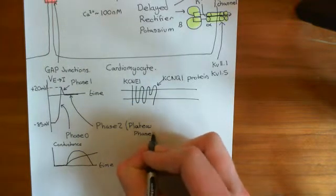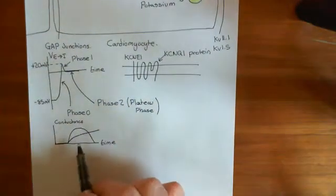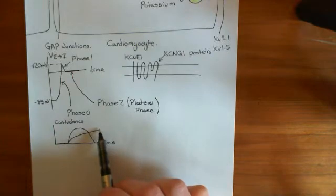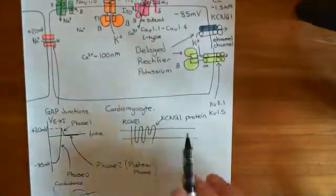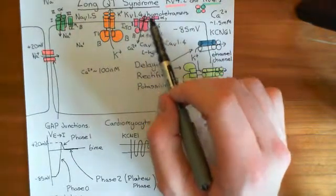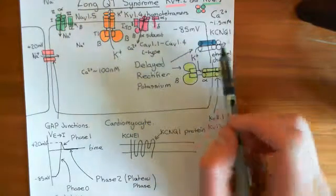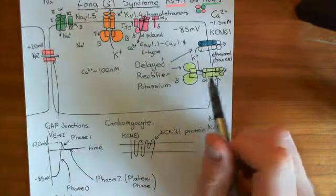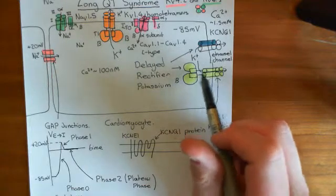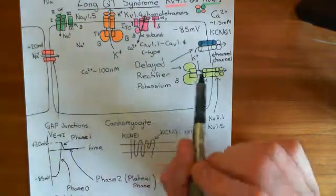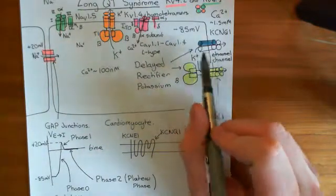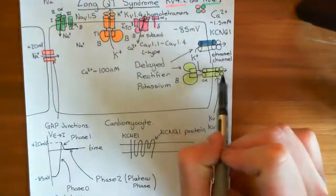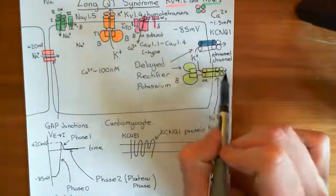After the plateau phase, looking at the conductance graphs: the conductance of the voltage-gated calcium channels starts to drop, whereas the conductance of the potassium channels stays high. The L-type calcium channels start closing while the KCNQ1 channel and the KV11.1 or KV1.5 homotetramers remain open. So potassium current remains high and calcium current falls — overall, there is now a net current of positive charge moving outwards.